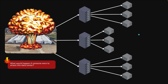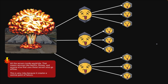But what would happen if someone were to attack this data center? What if they just bombed the entire center with all these thousands of computers inside of it? If that happened, all the servers inside would die. That means services like Netflix and Disney and anyone else that uses these servers would also go offline. This is super risky because it creates a central point of failure.